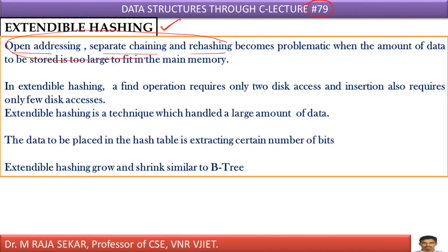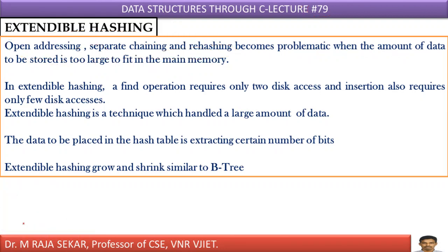All these hashing techniques we already discussed — open addressing, separate chaining, and rehashing — become problematic when the amount of data to be stored is too large to fit in the main memory. We have a difficulty when the amount of data is so huge. These hashing techniques may not be that efficient. In order to provide a solution, they introduce a new hashing technique known as extendable hashing, which needs only two disk accesses.